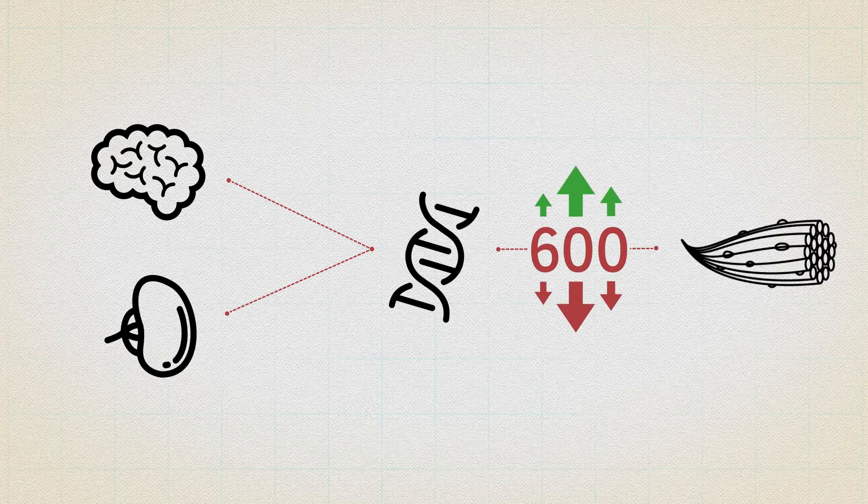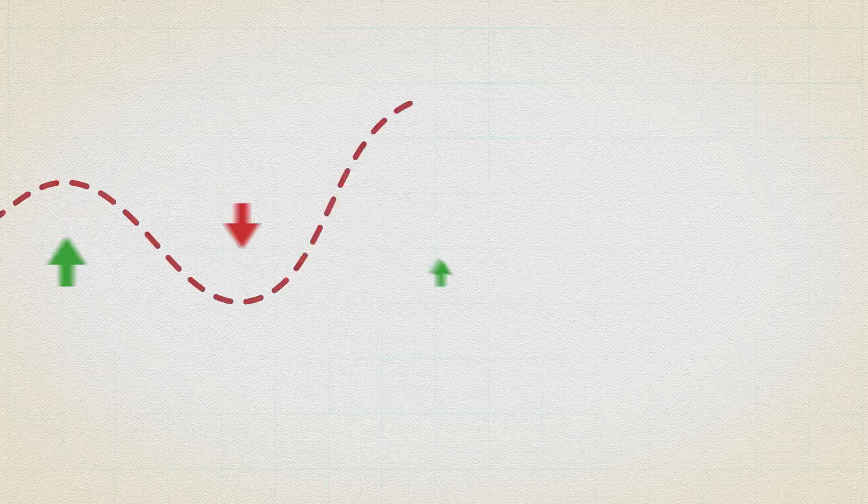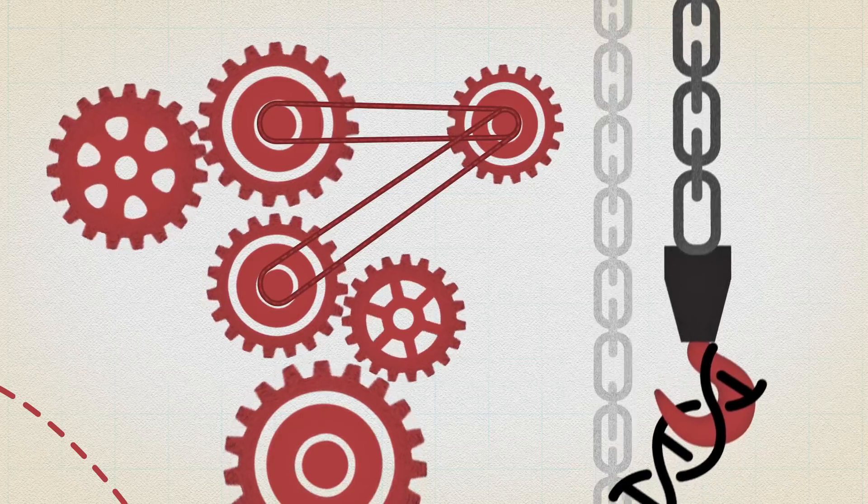More than 600 either increased or decreased their activity. And those increases in gene expression waxed and waned in a way that suggested biochemical machinery was still working.